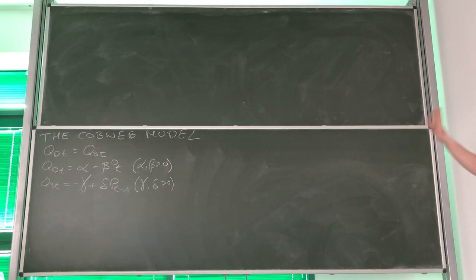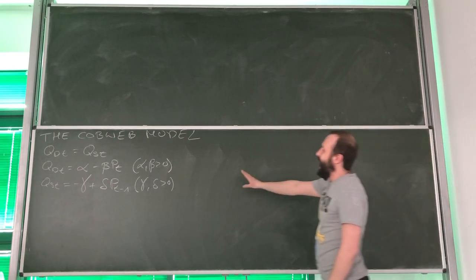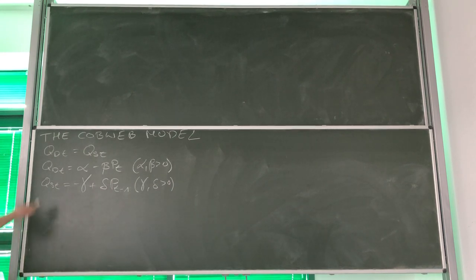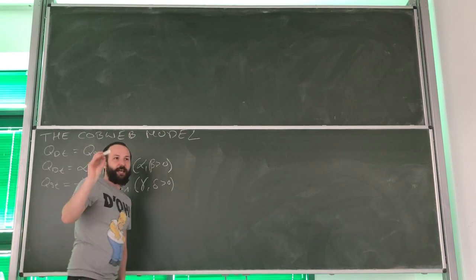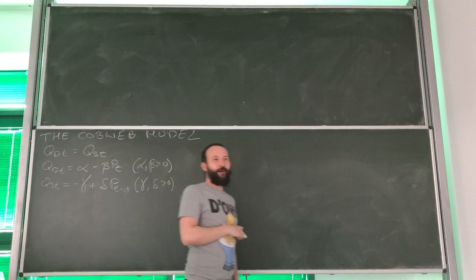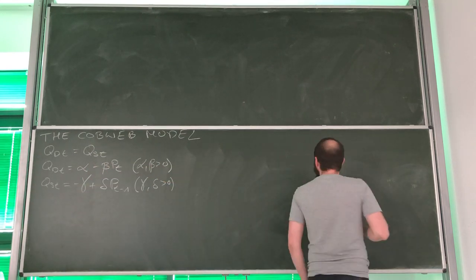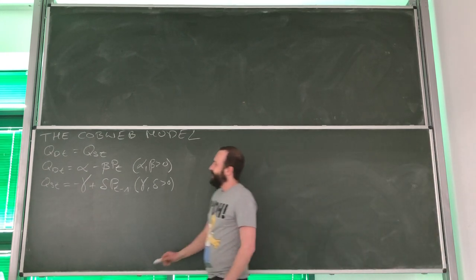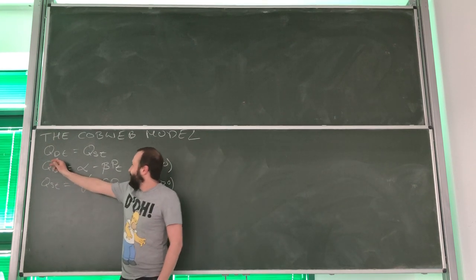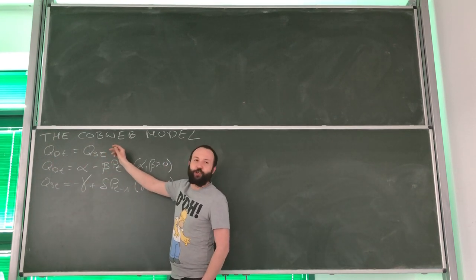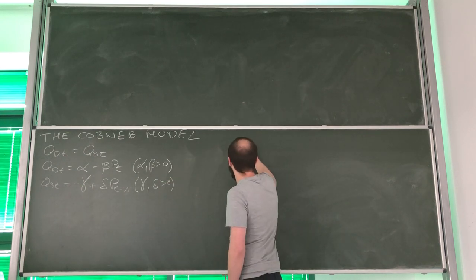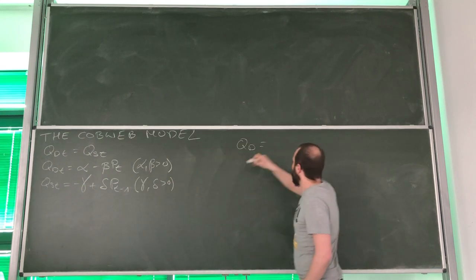This is captured within three equations. Equation number one is an equilibrium condition. This equilibrium condition is very specific and different from what we normally use. Here we have QDt equals QSt.